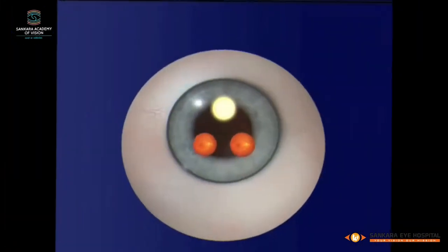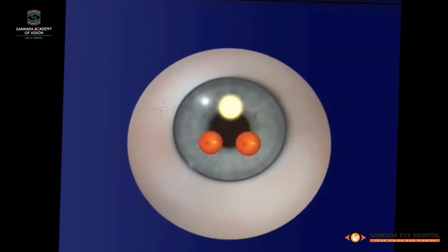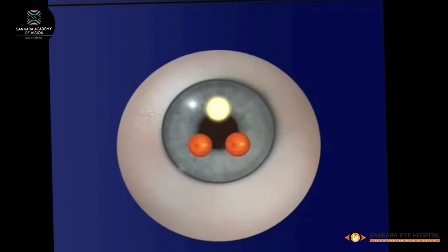If the pupil is poorly dilated, one of the beams will fall outside the pupil, and stereopsis is therefore lost.